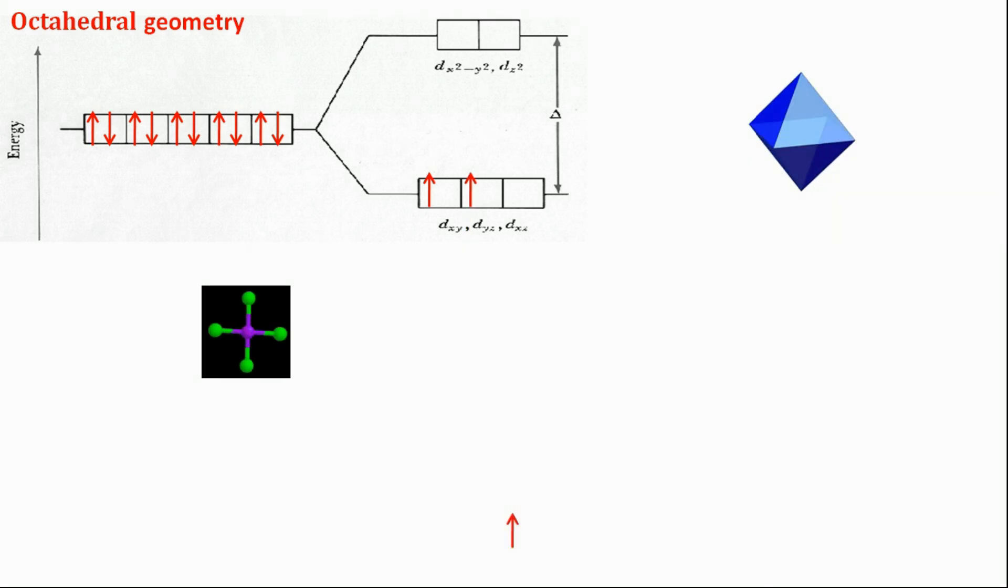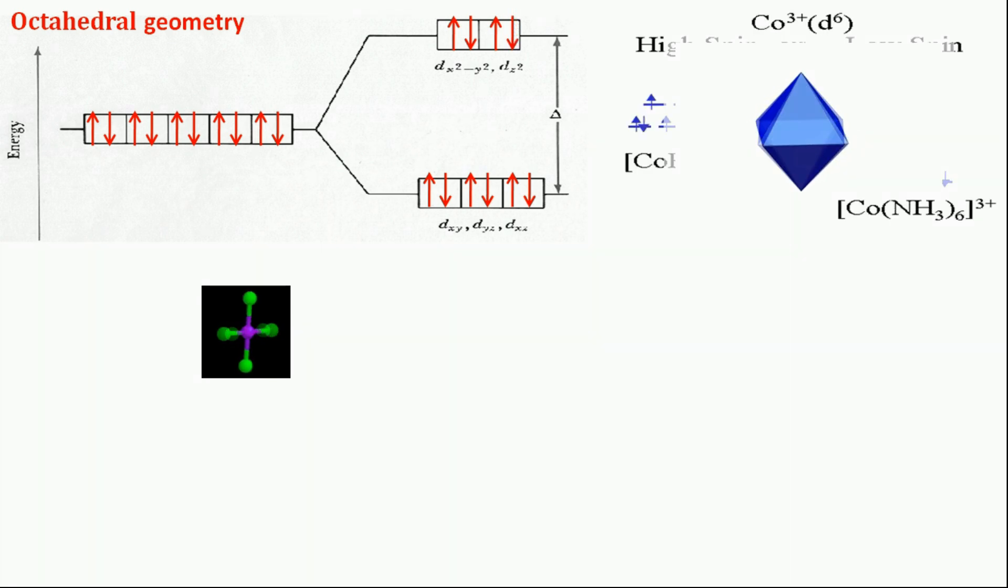The splitting of degenerate level in the presence of ligand is known as crystal field splitting. The difference between energy of T2G and EG level is denoted with delta naught. Some ligands tend to produce strong fields, thereby causing large crystal field splitting, whereas some ligands tend to produce weak fields, thereby causing small crystal field splitting. Thus, the crystal field splitting depends upon the field produced by ligand and the charge on the metal ion. The main pattern of splitting of d-orbitals depends upon the nature of the crystal field.